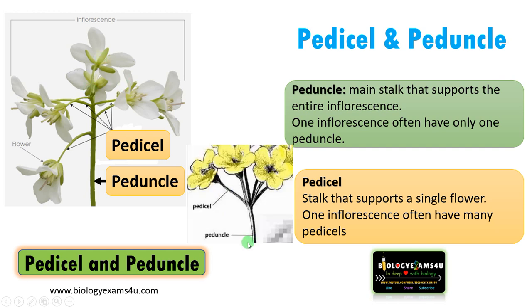To make it more clear: this main stalk is called the peduncle, which supports the inflorescence, whereas the pedicel is the stalk that supports a single flower.